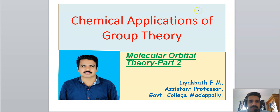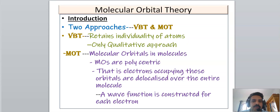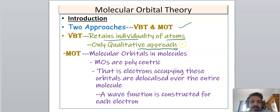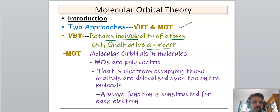We will cover the application of group theory in molecular orbital theory. We know that there are two important approaches in bonding: valence bond theory and molecular orbital theory. Valence bond theory retains the individuality of atoms and is only a qualitative approach — it fails in many aspects of bonding and cannot be used for quantitative aspects.